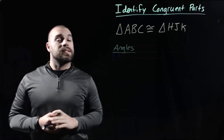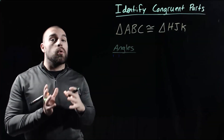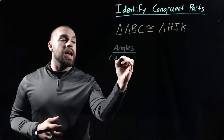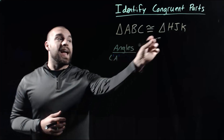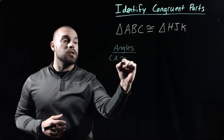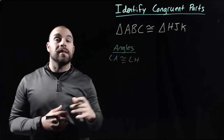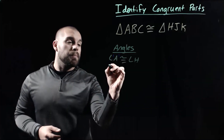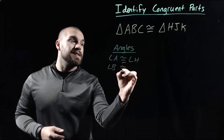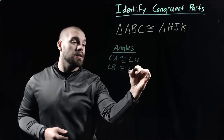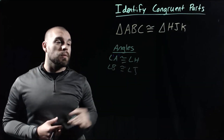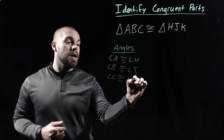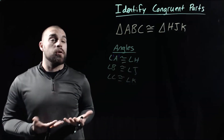The nice thing about congruent statements is that they're written with their corresponding pieces in the same order. Angle A has to be congruent to angle H because they're both in that first position. Angle B came second and angle J comes second, so those two pieces have to be congruent. And angle C is going to have to be congruent to angle K because those came third in the list.